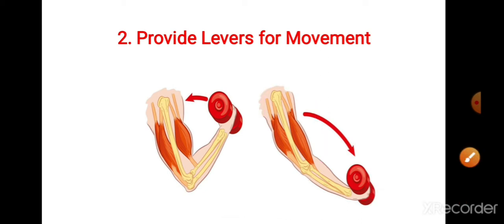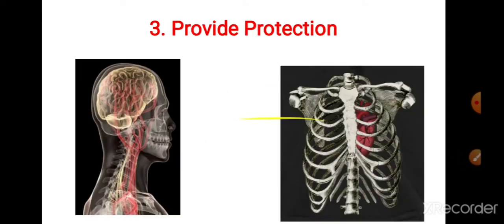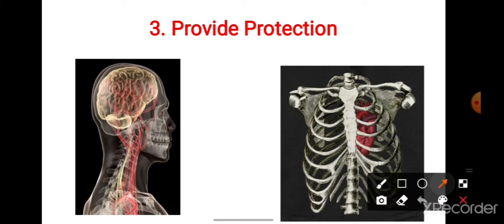The third function is bones provide protection to internal delicate organs. For example, the skull's cranium protects the brain. Heart and lungs are protected by ribs.